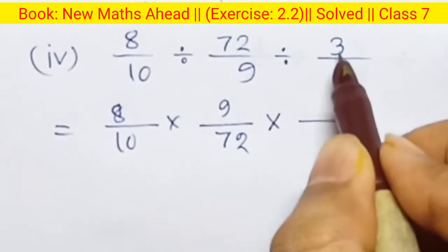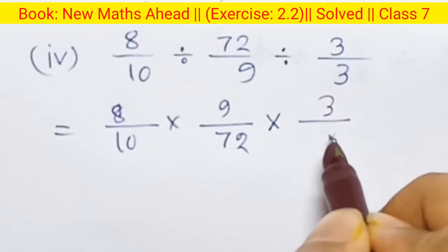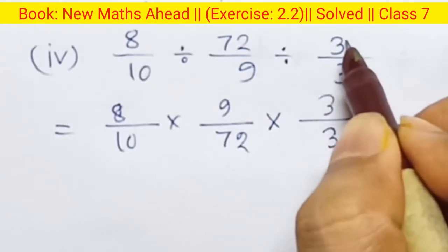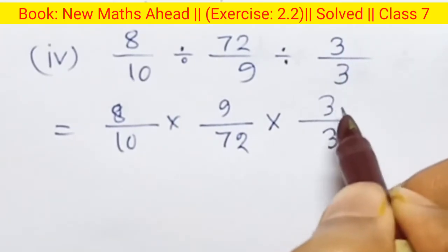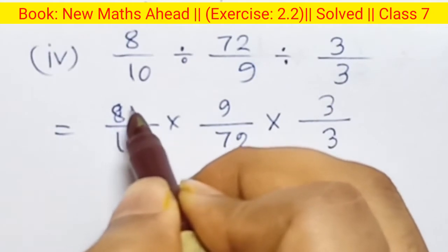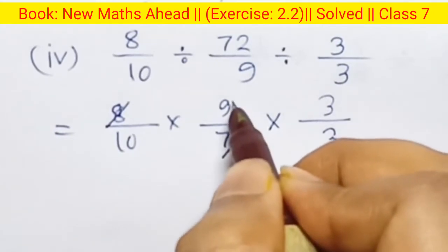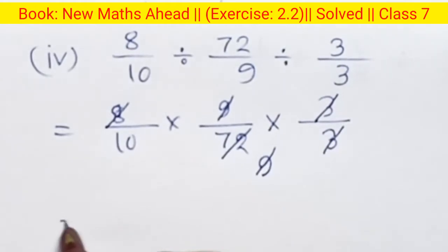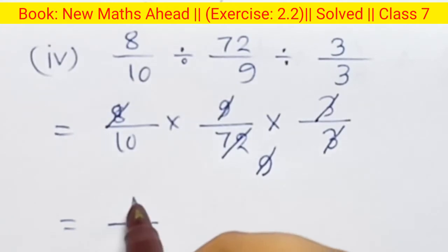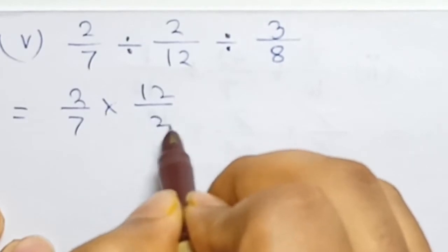Next, divide becomes multiplication. Fraction: reciprocal is T by T, so 3 by 3. Denominator to numerator, numerator to denominator — so 8 into 72. Eight nines are seventy-two. So nine and nine cancel, three and three cancel.